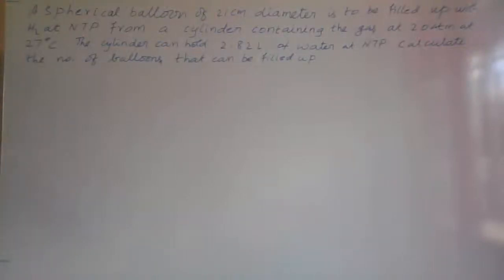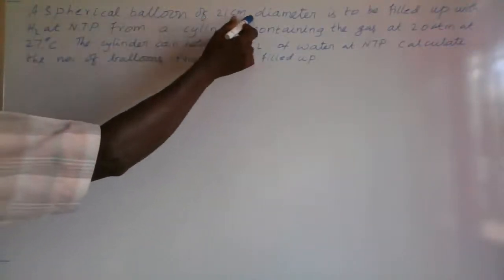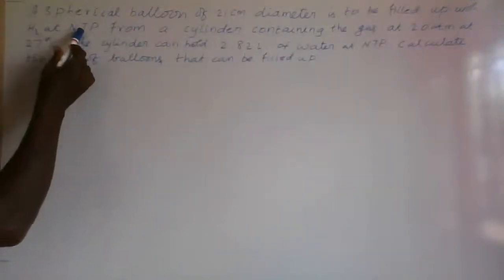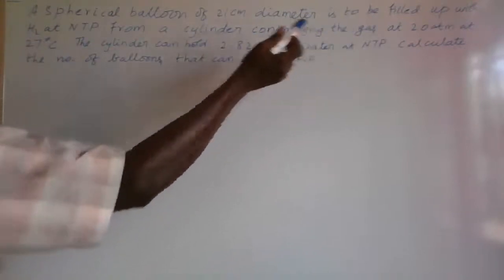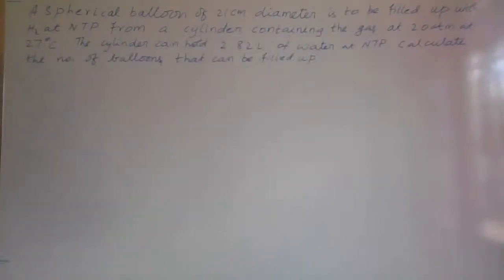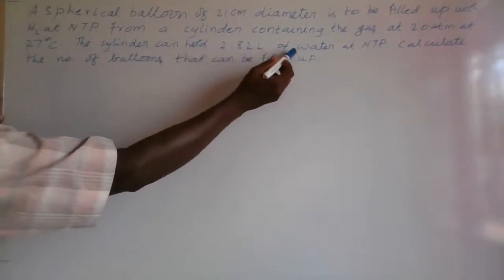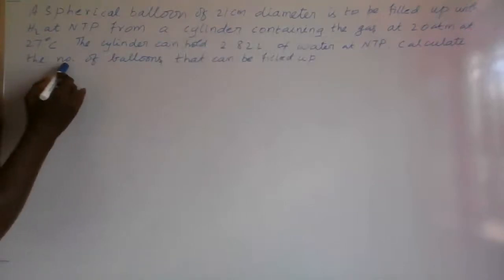Let us see the sample. A spherical balloon of 21 centimeter diameter is to be filled up with hydrogen gas at NTP from a cylinder containing the gas at 20 atmosphere at 27 degrees Celsius. The cylinder can hold 2.82 liter of water at NTP. Calculate the number of balloons that can be filled up.